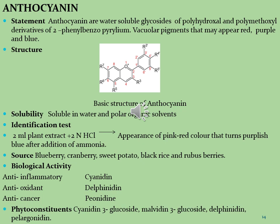Plants rich in anthocyanins are Vaccinium species such as blueberry, cranberry, and bilberry, including black raspberry, raspberry, cherries, eggplant peel, black rice, and sweet potato. It is also found in Concord grapes, muscadine grapes, red cabbage, and violet petals.